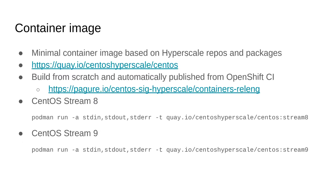On the container side, we have a container image for Hyperscale. This is a build-from-scratch container image — it is not based on the stock CentOS Stream container image for historical reasons. You can find the build scripts, but it uses Buildah and the normal flow. It's published on Quay. It used to be published manually, but now we have automation: a periodic task that runs in OpenShift that builds and publishes it every week. So it should be a fairly up-to-date image, useful if you want to test something quickly — it has our repos enabled already, runs our systemd, and all of that.